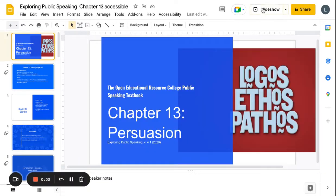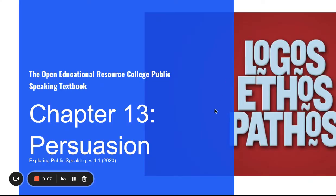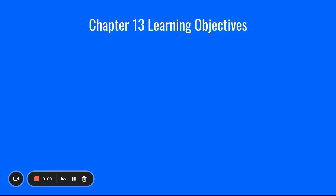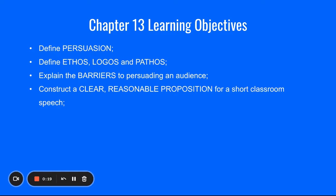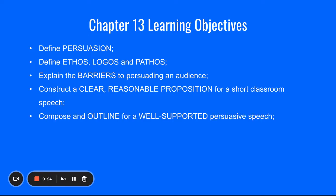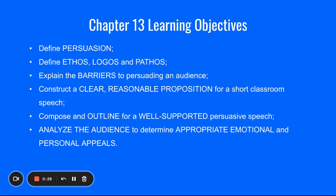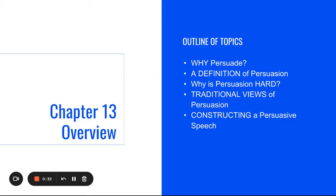Chapter 13, Persuasion. In this chapter, we're going to look at persuasive speaking. Our objectives are to define persuasion, ethos, logos, and pathos; explain the barriers to persuading an audience; construct a clear and reasonable proposition for a short classroom speech; compose an outline for a well-supported persuasive speech; and analyze the audience to determine appropriate emotional and personal appeals.